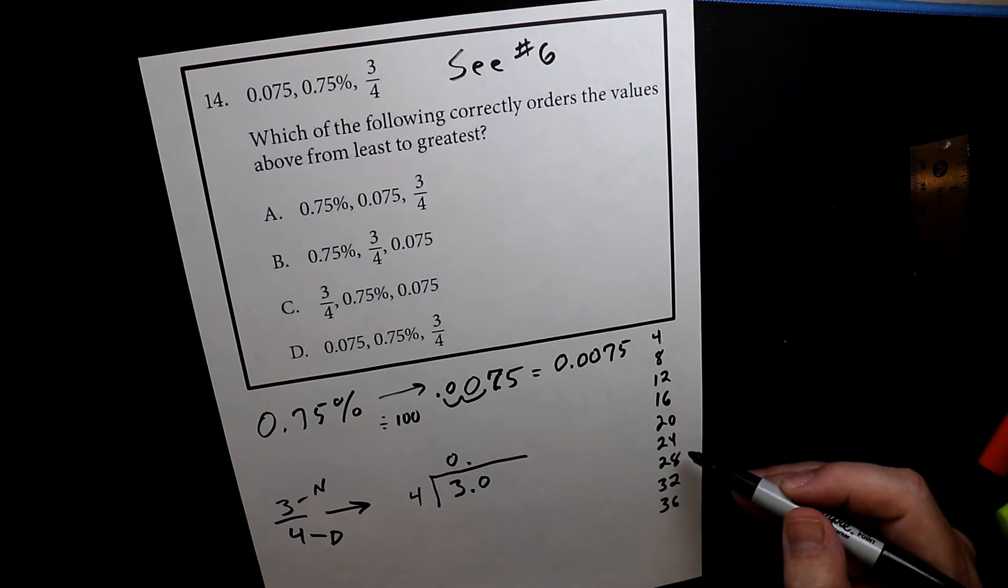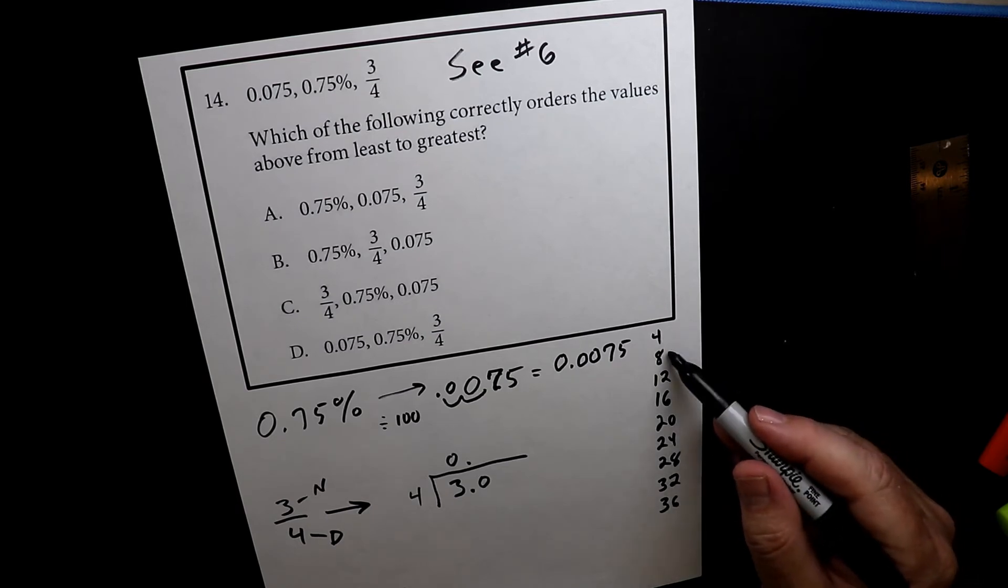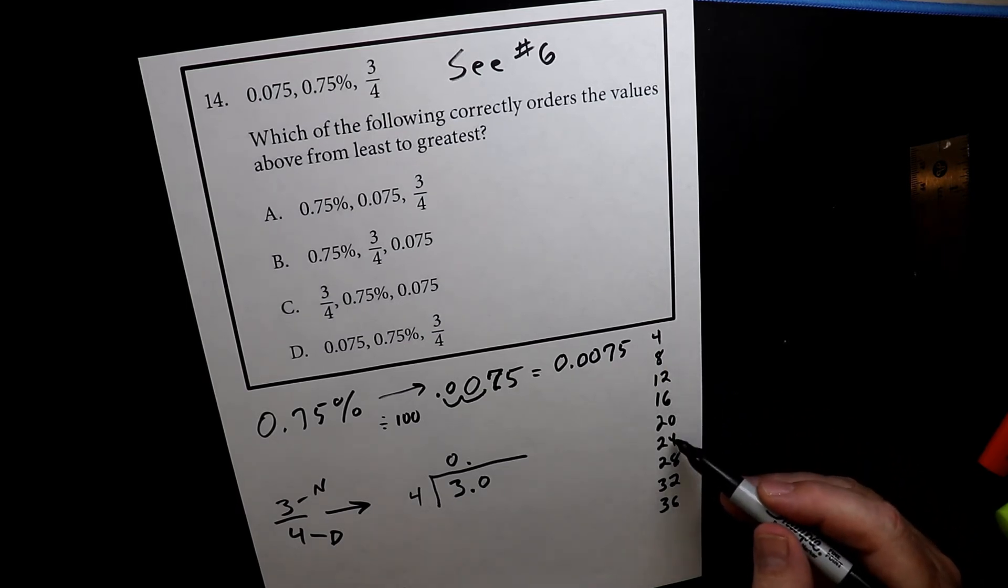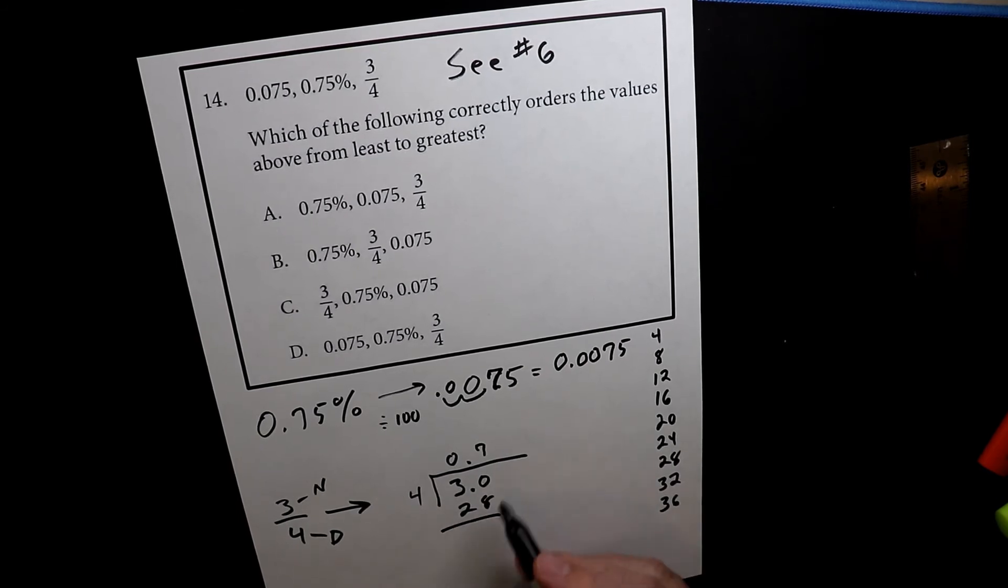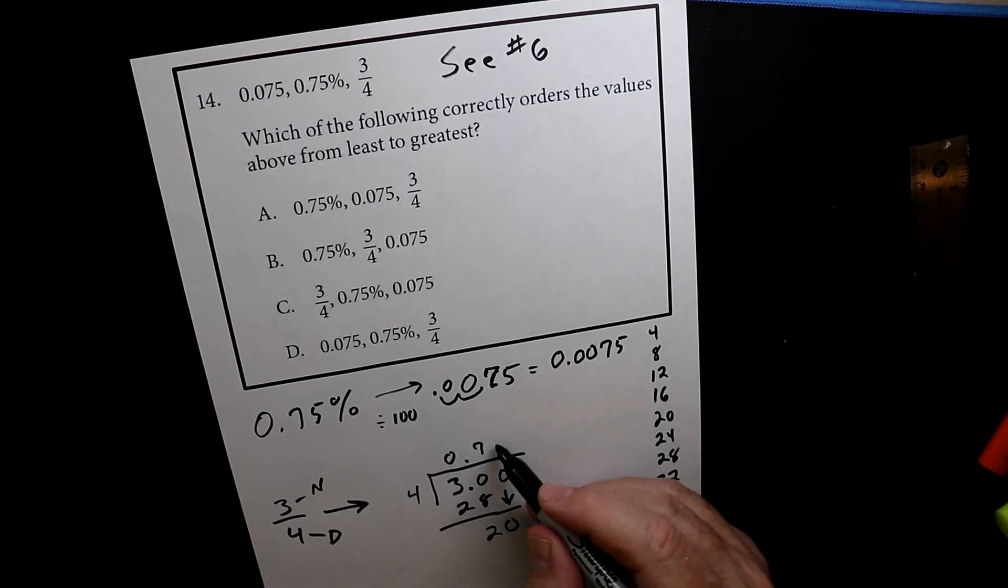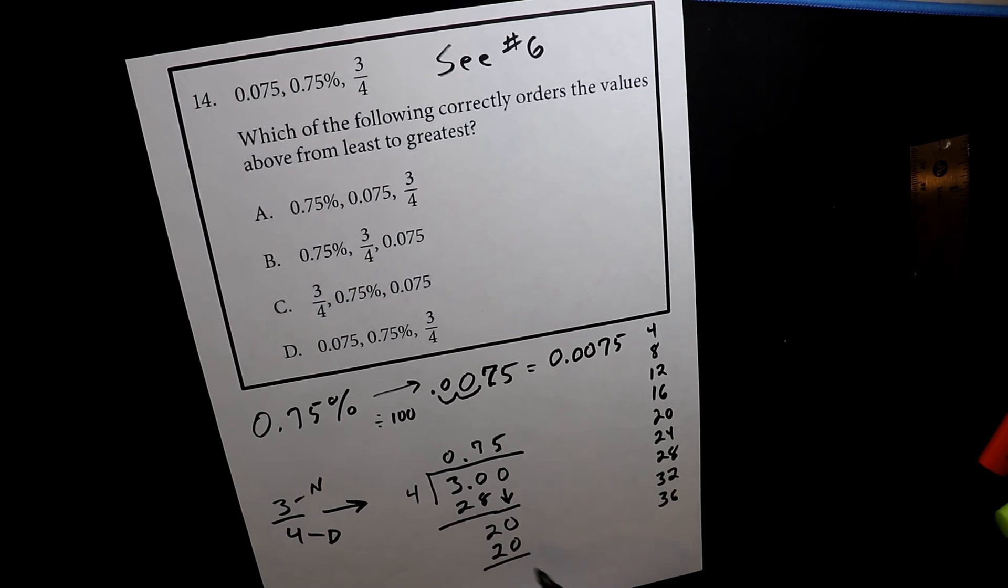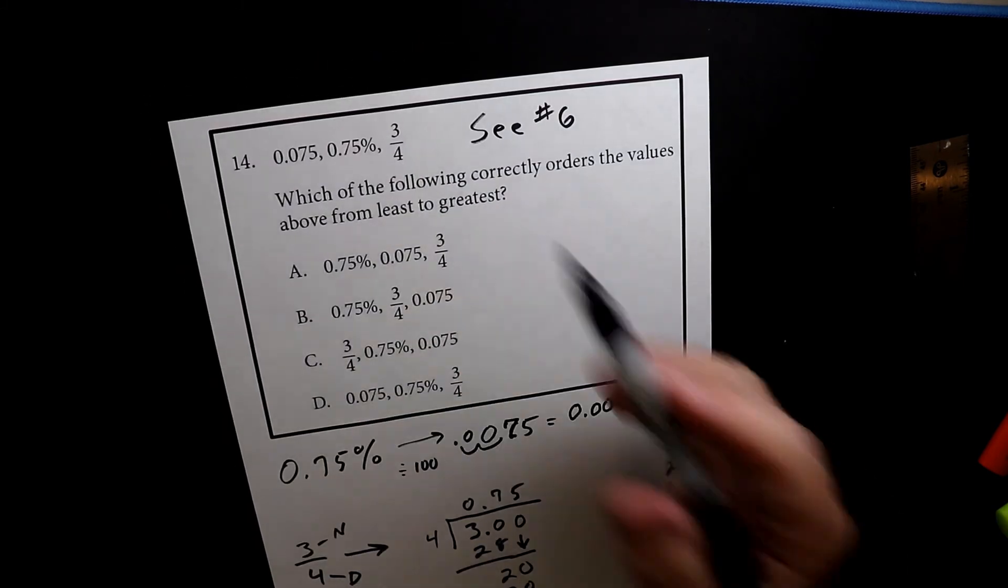So how many times does four go into 30? So I look for a number that's smaller than 30. There we go. So it's 28. So seven times four is 28. I subtract 28 from 30 gives us two. I add another zero. I bring it down. So I see it goes in perfectly five times. So we're done. So the last one is 0.75.